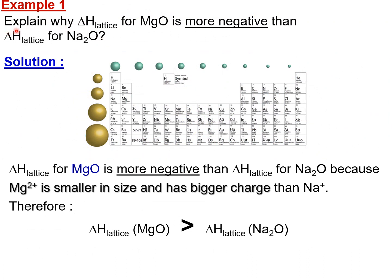For this example, we need to explain why the enthalpy lattice of MgO is more negative than the enthalpy lattice of Na₂O. 'More negative' means MgO has a larger magnitude. To explain this, recall the two factors affecting the magnitude of enthalpy lattice: first, ionic radius; second, ionic charge.